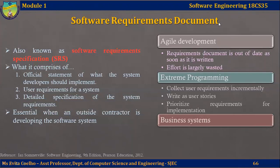The SRS is essential when an outside contractor is developing the software system. Agile development methods are software development methods that incorporate changing customer needs. Agile development methods argue that the requirements change so rapidly that building a requirements document becomes out of date as soon as the document is written, so the entire effort for building this document with such detailing is largely wasted.